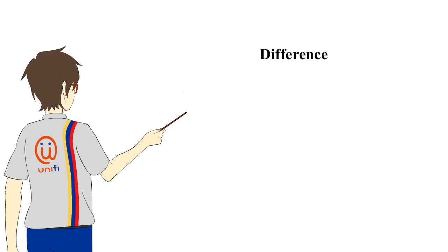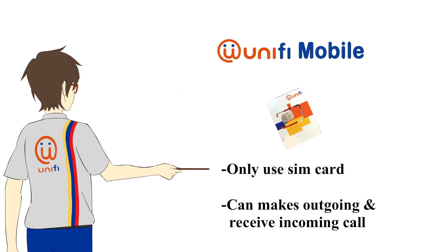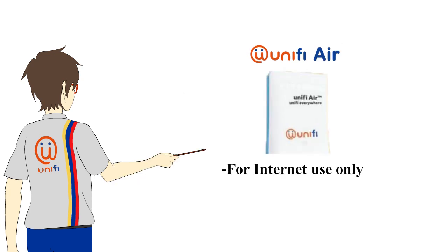What are the differences between Unify Mobile and Unify Air? Unify Mobile is using a SIM card only and can make outgoing and receive incoming calls. However, Unify Air is only used for internet.